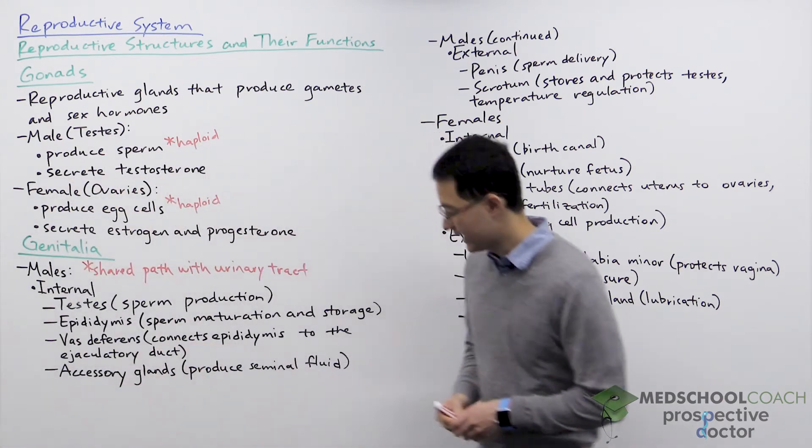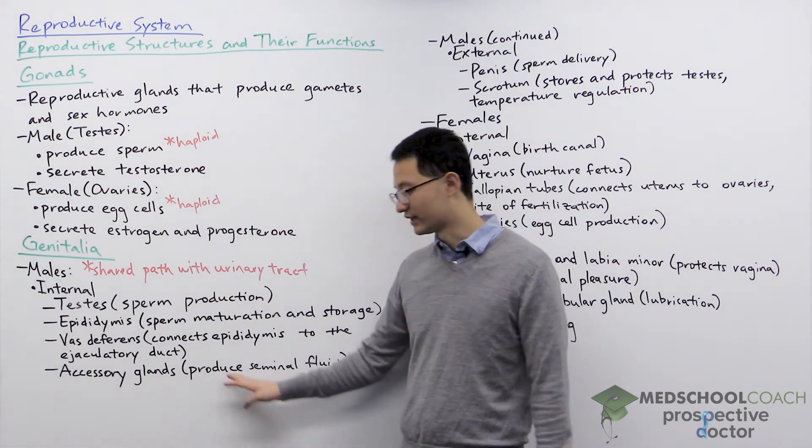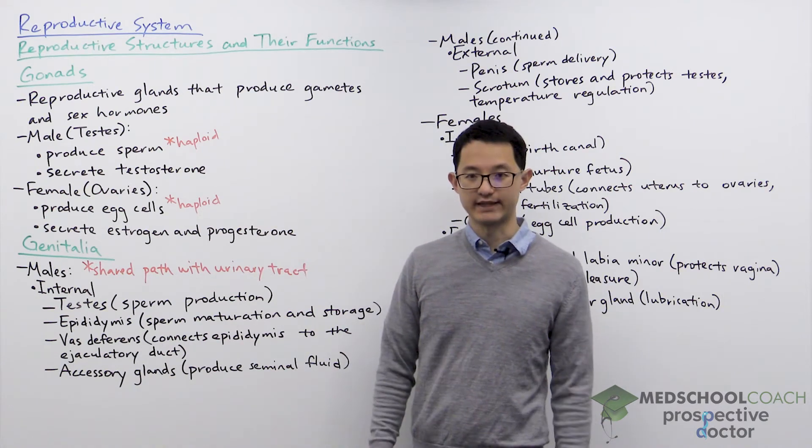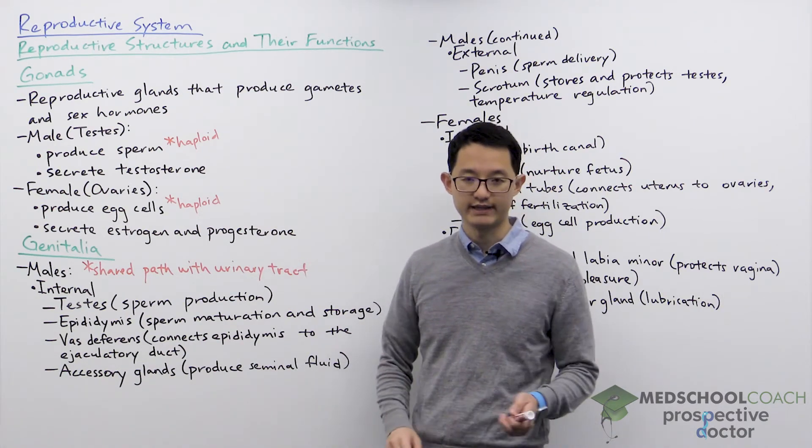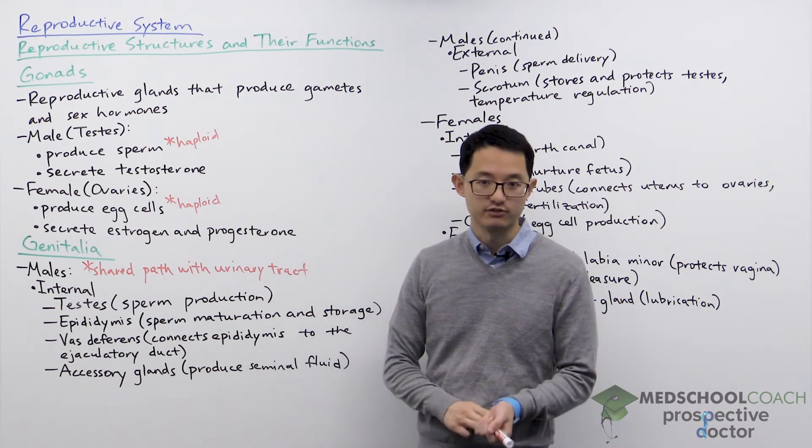The last internal structures are the accessory glands. There are multiple accessory glands: the bulbourethral gland, the prostate gland, and the seminal vesicles.